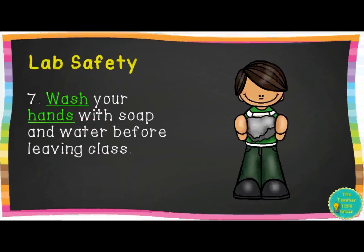Rule seven: wash your hands with soap and water before leaving class. Right after you finish the lab, let me know you're done, and I'll have you go into the hallway to wash your hands at the sink. That's just to keep everything clean, but in other labs it's even more important because you might have chemicals on your hands that could hurt someone.